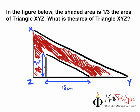So, it says that the shaded area is one third. That means one out of three parts. The area of triangle XYZ. What does that mean? That means this one inside is actually how much? It's actually two third. I'm not going to give you so many clues right now. But, in the figure below, the shaded area is one third the area of triangle XYZ. What is the area of triangle XYZ?